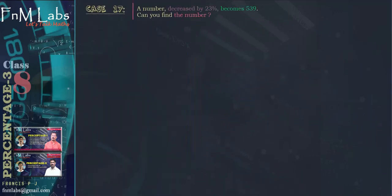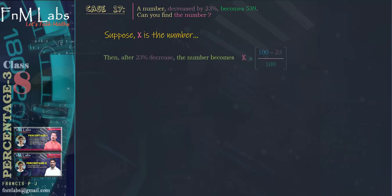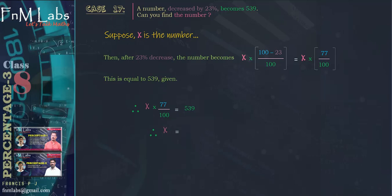Case number 17. A number decreased by 23% becomes 539. Can you find the number? Suppose x is the number. Then after 23% decrease, the number becomes x × (100 - 23)/100 = x × 77/100. It is given this equals 539. So x × 77/100 = 539, therefore x = 539 × 100/77. Simplifying, we get x = 700. Therefore, the required number is 700.